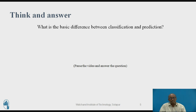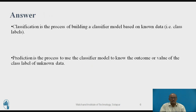What is the basic difference between classification and prediction? Classification is the process of building a classifier model based on known data, that is class labels. Prediction is the process of using the classifier model to determine the outcome or value of the class label of unknown data. In classification, we know the label of the data, but in prediction, we do not know the label or class of the data.